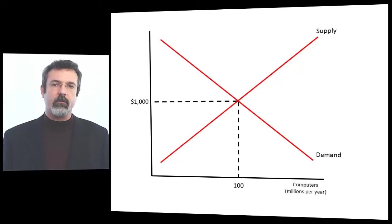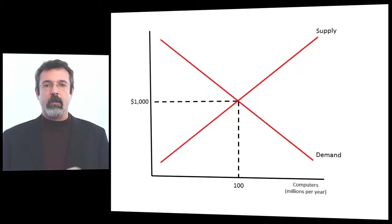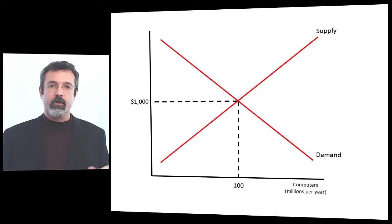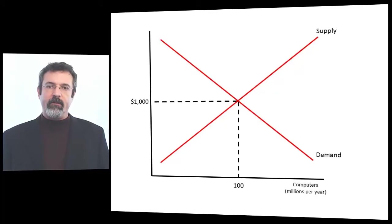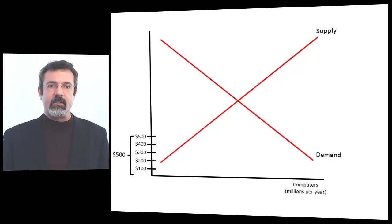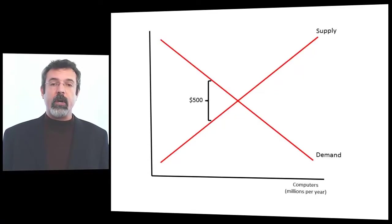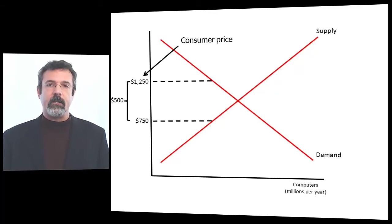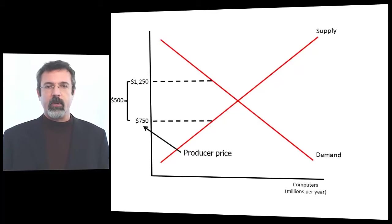Now, suppose the government imposes a $500 excise tax on computers — that's $500 tax per computer sold. To see the effect of the tax, we find the amount of $500 on the graph and insert it so that it touches both demand and supply. This gives us two prices: a consumer price of $1,250 and a producer price of $750.